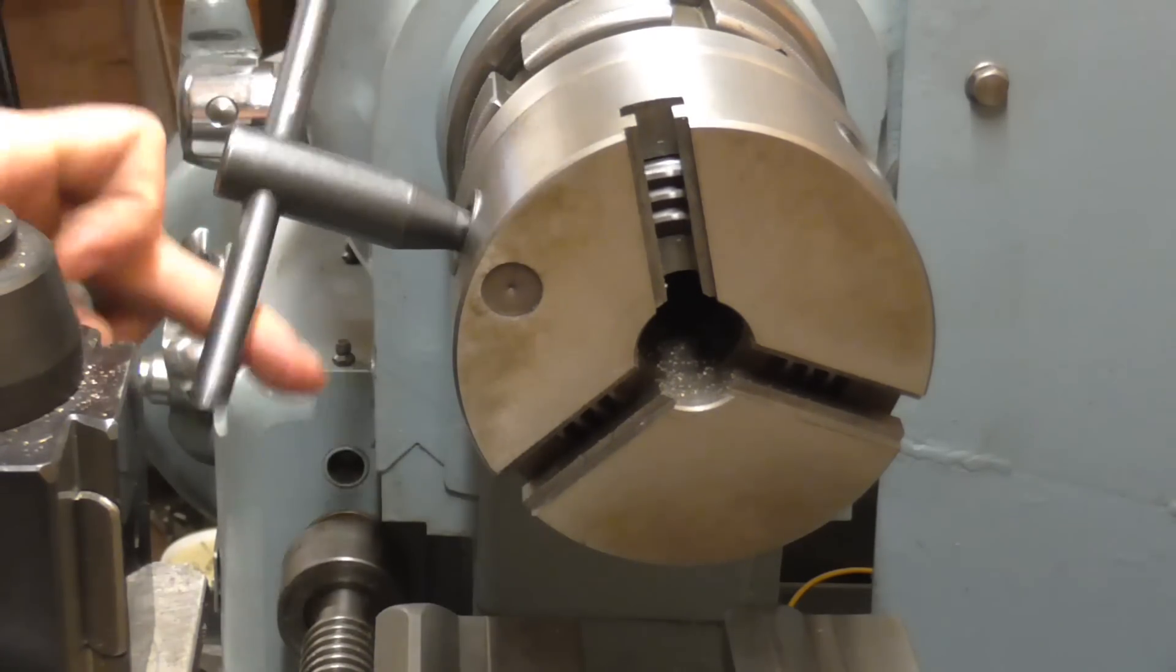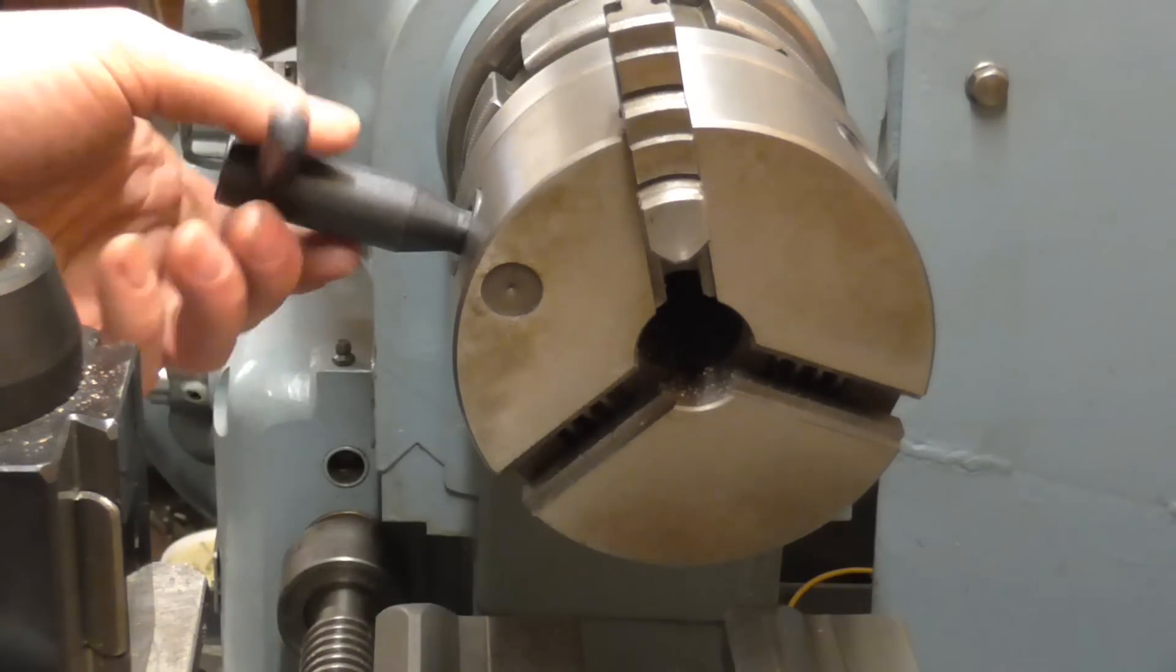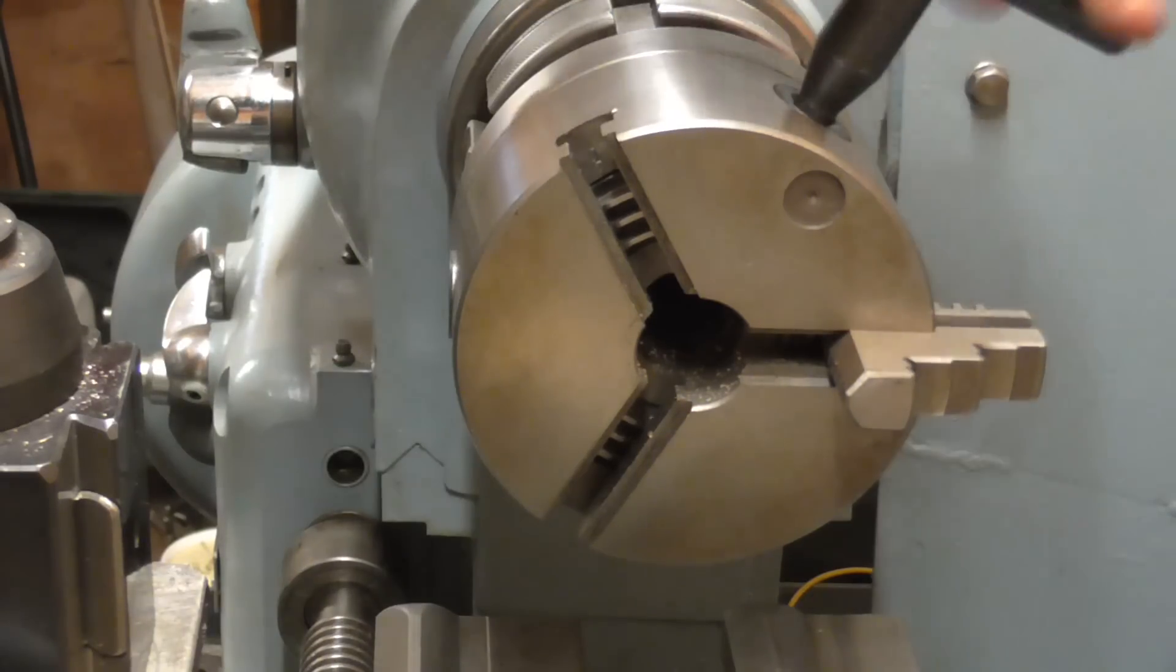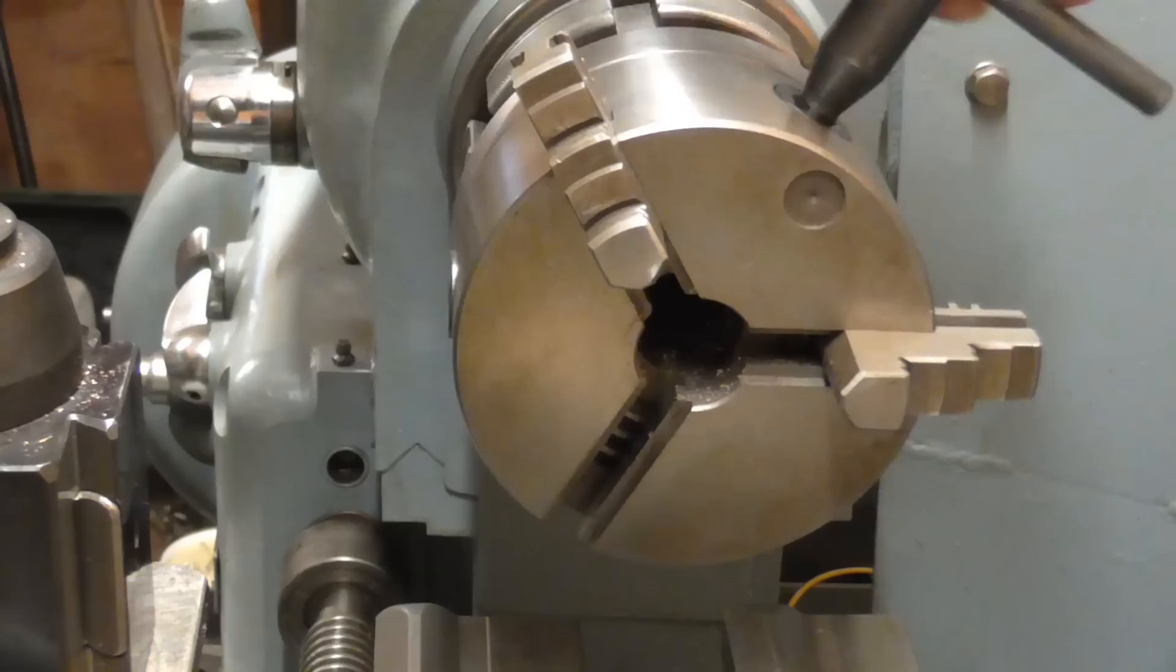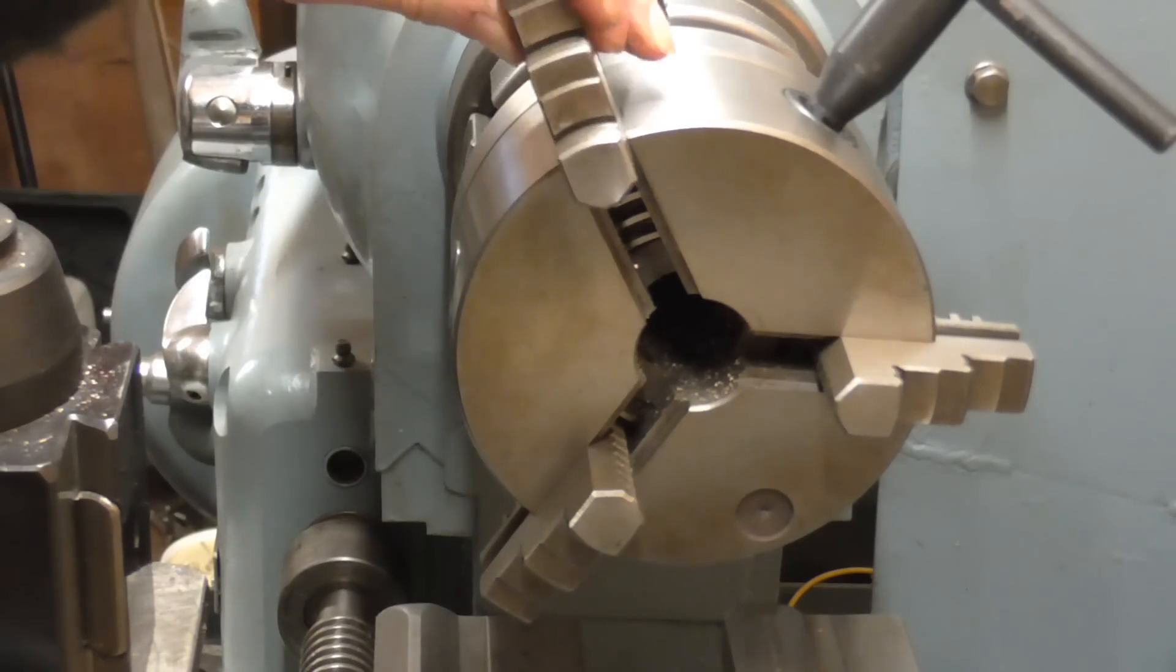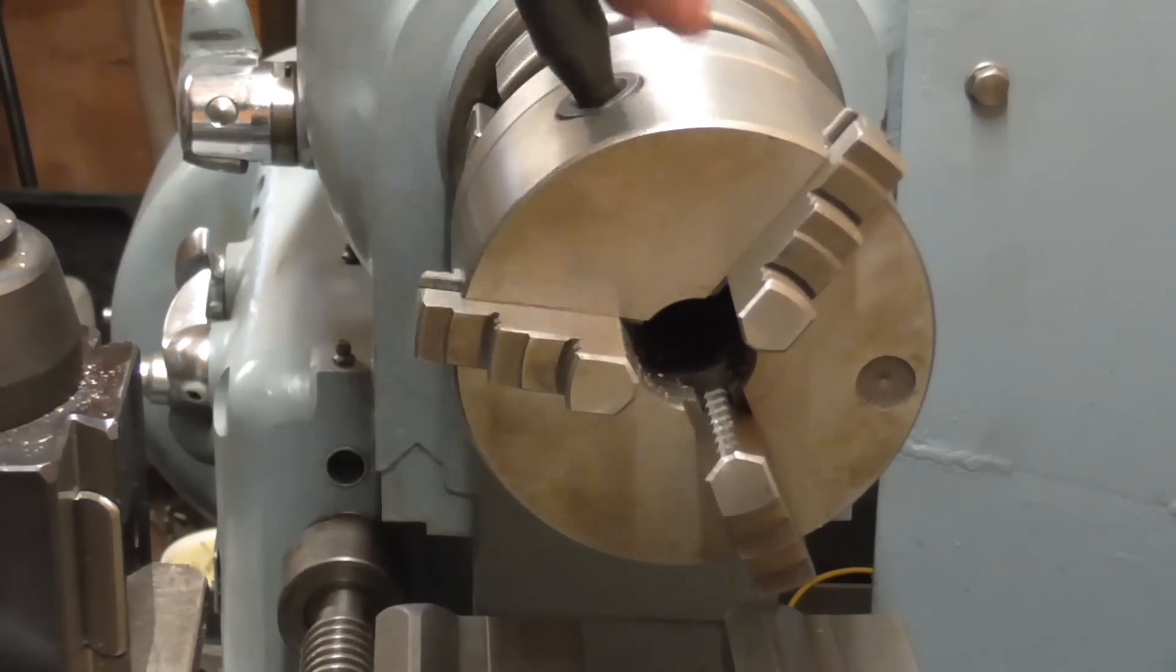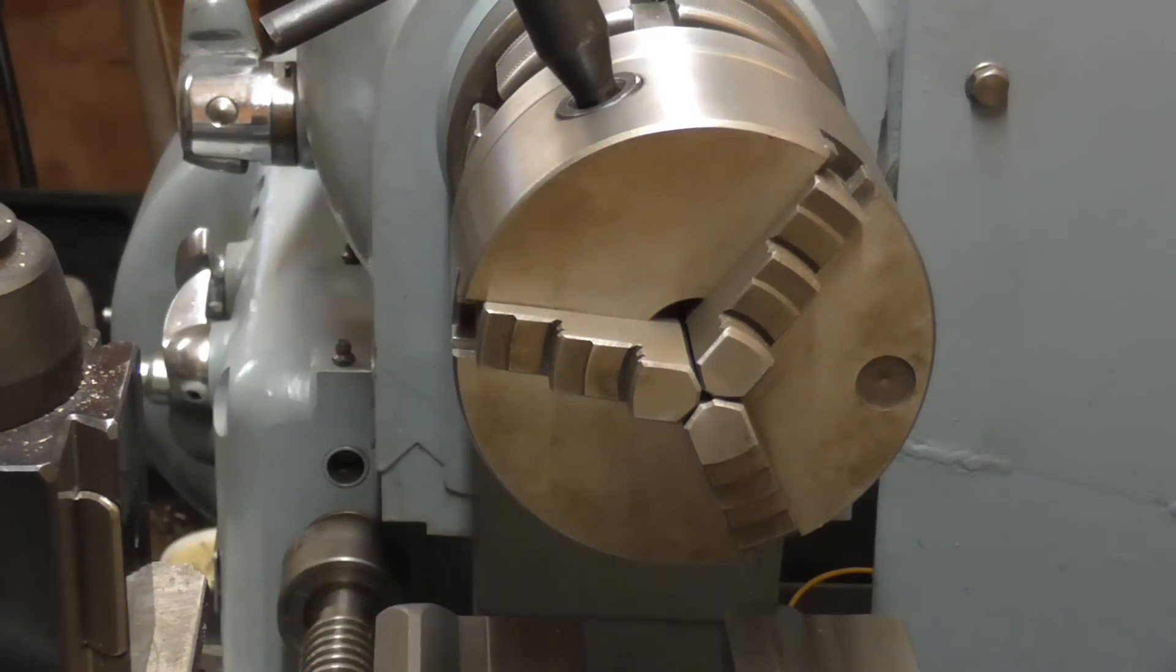So let's go with slot number three. And into slot number three we will put jaw number one, and jaw number two is in slot one, and number three is in two. And as you can see they correctly centre up.